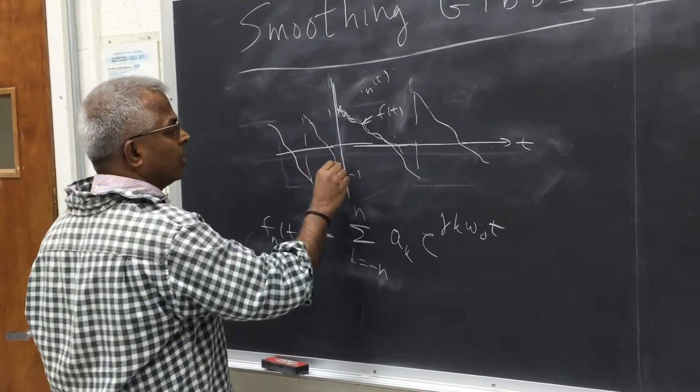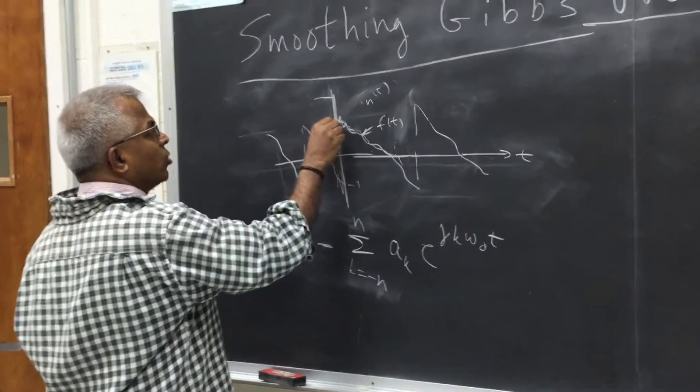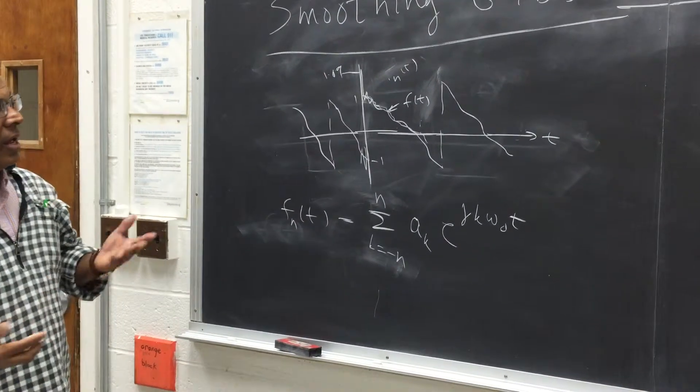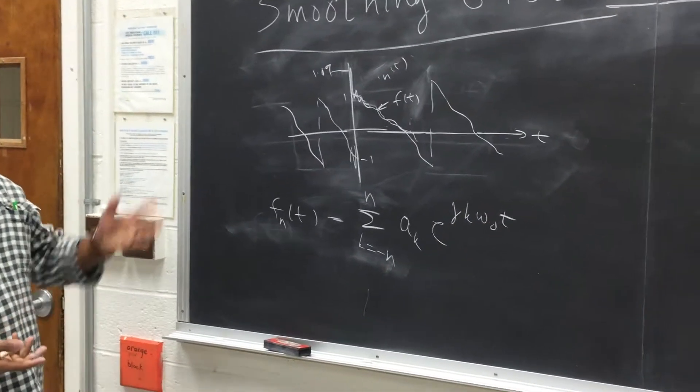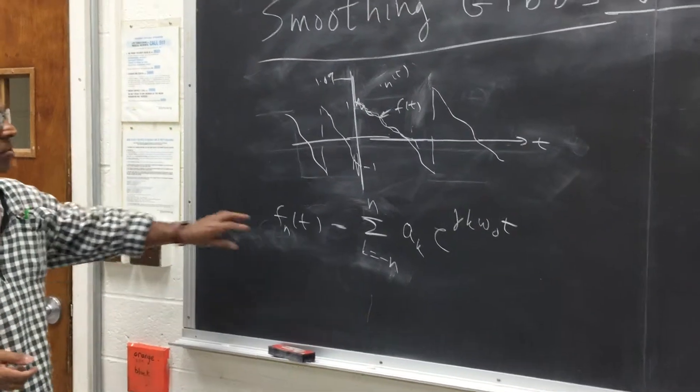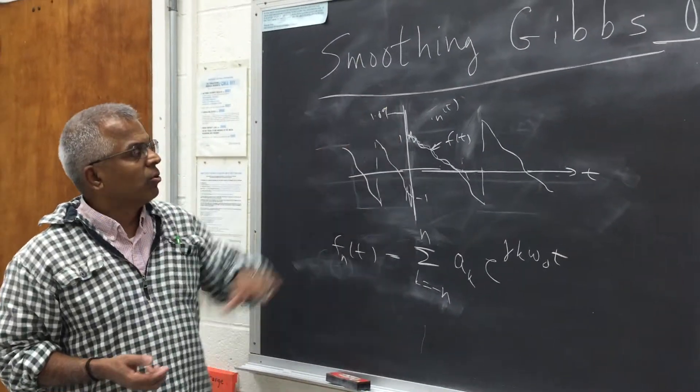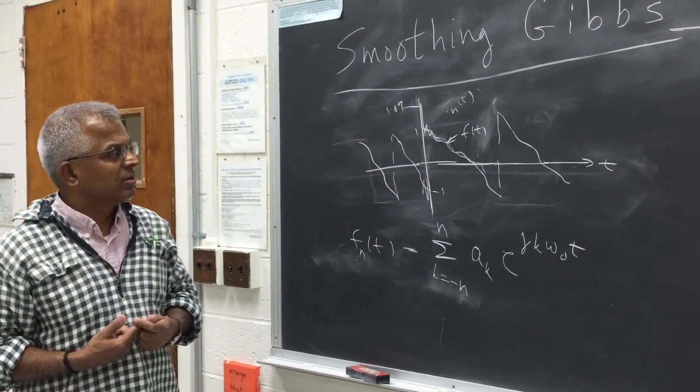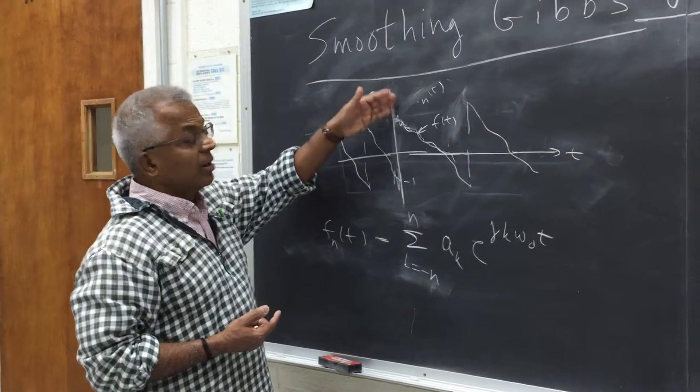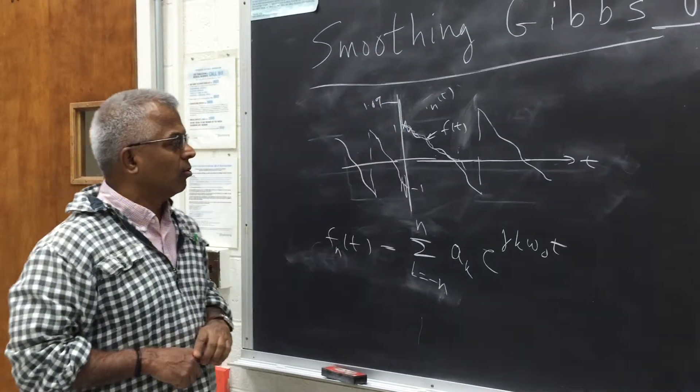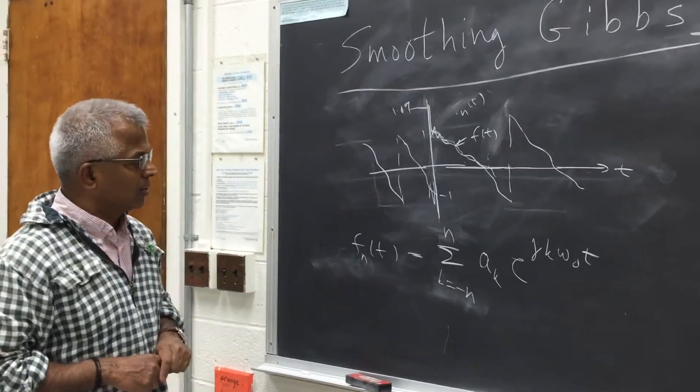an overshoot and undershoot. So this overshoot is about 9% and as we have shown this is independent of, it doesn't matter how many terms you take, the overshoot is still going to remain at 9%. And then there will be a ringing here, the second overshoot, etc. So there will be n overshoots and similarly n undershoots.